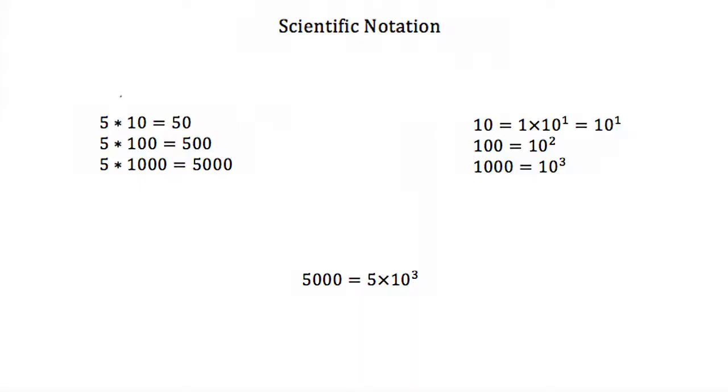What if I decided to rewrite this 10, this 100, and this 1000? I start writing them as 10 or 1 times 10 to the first, or 100 would be 10 squared because 10 times 10 is 100, and then 1000 would be 10 to the third, 10000 would be equal to 10 to the fourth and so on.